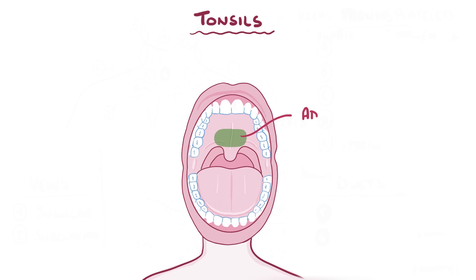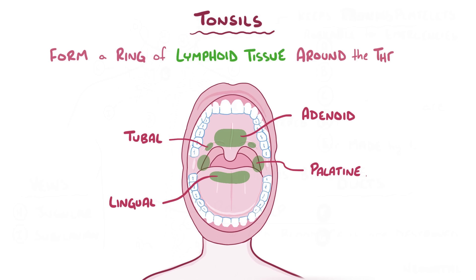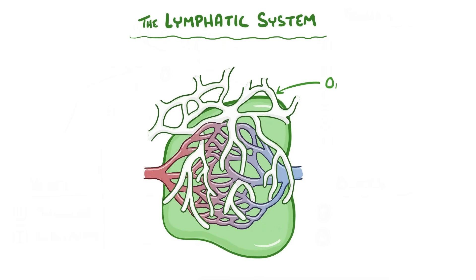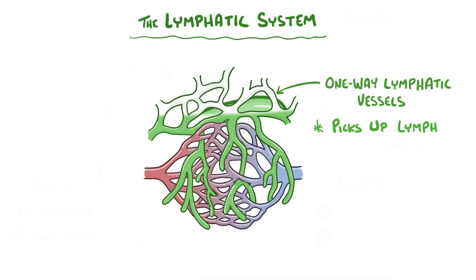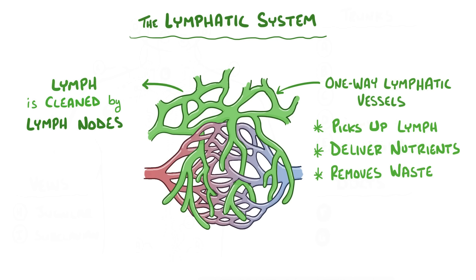A final set of lymphoid organs worth mentioning are the tonsils, which include the adenoid, tubal tonsils, palatine tonsils, and lingual tonsils. Together they form a ring of lymphoid tissue around the throat, and their main job is to trap pathogens from the food you eat and the air you inhale. As a quick recap, the lymphatic system refers to the one-way network of lymphatic vessels that allows lymph — a clear fluid squeezed out of the blood — to transport nutrients to cells and act as a method of waste removal. Lymph is cleansed at lymph nodes throughout the lymphatic system, which play an important role in immune function.